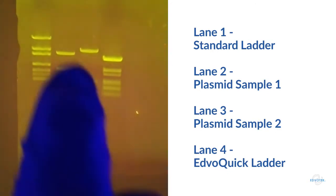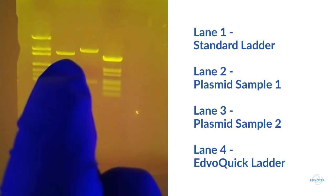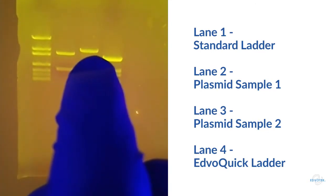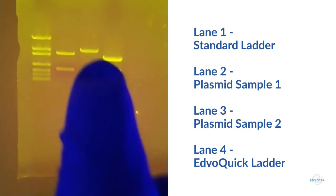In sample one, lane two, the top band is between the 2,800 and 3,600 base pair bands in our ladder. In sample two, the top band is above the 3,600 marker.